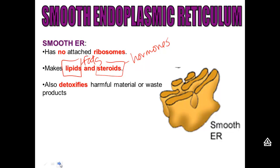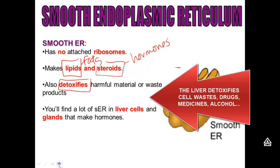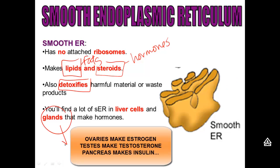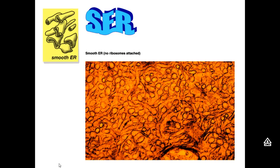One of the big jobs of the smooth ER, however, is to detoxify any kind of harmful waste. And that's why we find a lot of smooth ER inside liver cells. You also find a lot of smooth ER in any kind of gland because glands make hormones — ovaries make estrogen, testes make testosterone, the pancreas makes insulin.